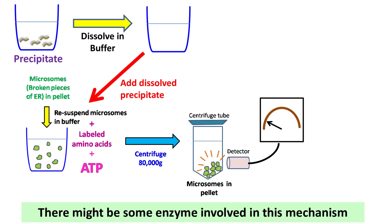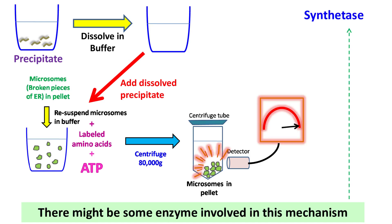The precipitate was dissolved in an appropriate buffer and the experiment was again repeated. In the presence of precipitate and ATP, the labeled amino acids were transferred onto the microsomes. Because the enzyme in the precipitate used ATP, it was identified as a synthetase enzyme.